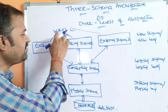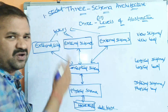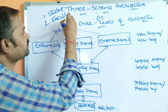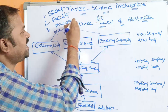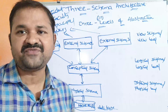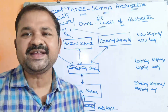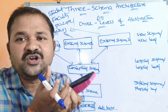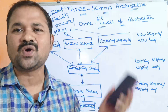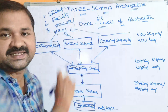Let us take the example of a university. We have three types of users: students, faculty, and principal. The view of the student will be different from the view of the faculty, and likewise the view of the faculty is different from the view of the principal. The database contains a vast piece of information, but not all that information is needed for these three types of users — only useful information will be visible to each of them.